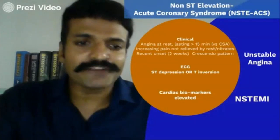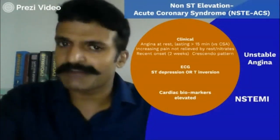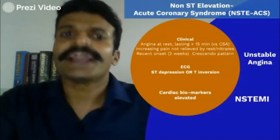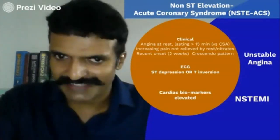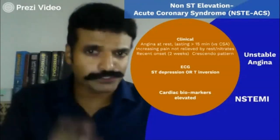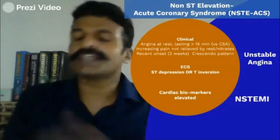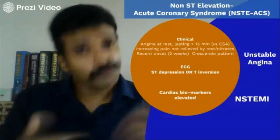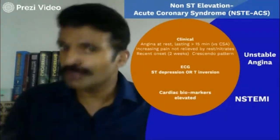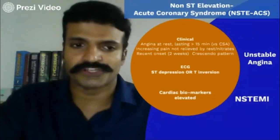So with that, we have completed our definition of unstable angina/NSTEMI, or the new name — non-ST elevation ACS. With the clinical features that do not fit into chronic stable angina, plus ST depression or T inversion, with or without positive biomarkers, you call it NST elevation acute coronary syndrome.